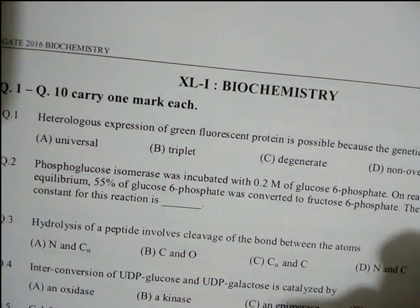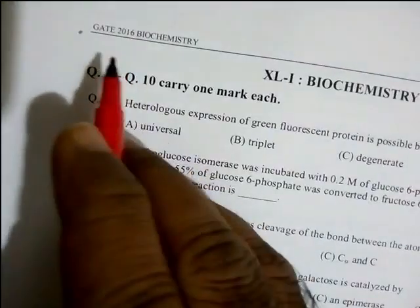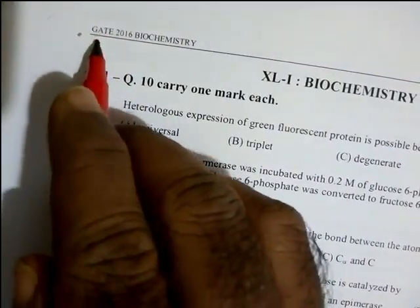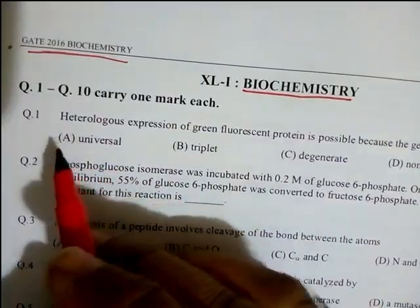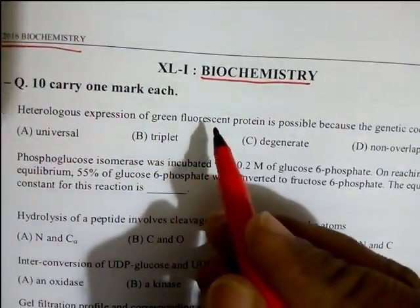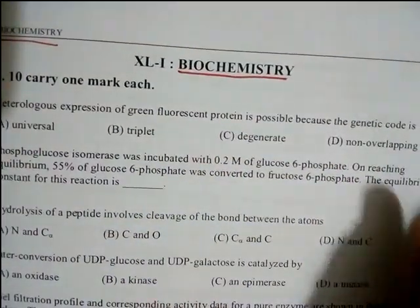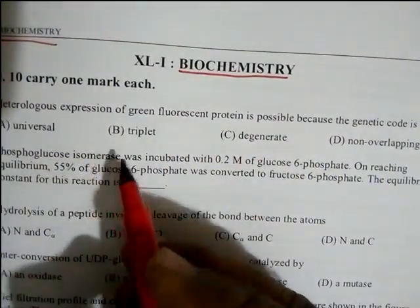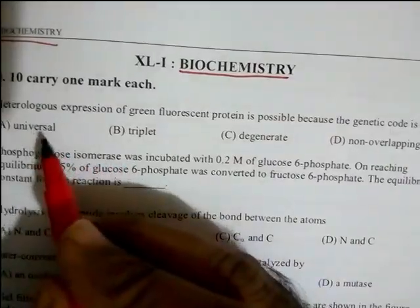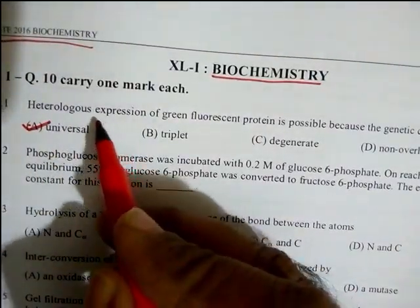Welcome to Science Academy YouTube channel. In today's session we are going to discuss the GATE 2016 biochemistry paper. The first question asks why heterologous expression of green fluorescence protein is possible. The answer is that the genetic code is universal.